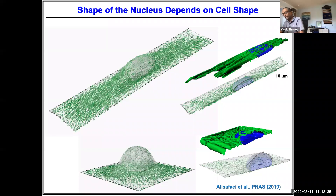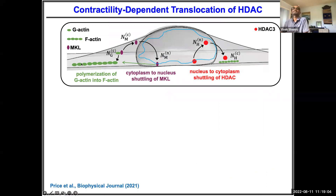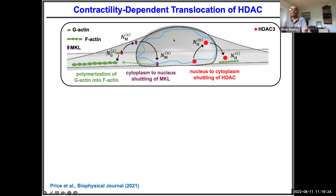What does this have to do with chromatin organization? As G-actin polymerizes to form F-actin, transcription factors like MKL that have substrates on G-actin are released — the thermodynamics are disturbed. As G-actin monomers polymerize to form F-actin, MKL can go into the nucleus, transcribe, and further stabilize the process. So transcription factors can shuttle from cytoplasm to nucleus. Conversely, factors with substrates on F-actin can do the opposite, going from nucleus to cytoplasm.